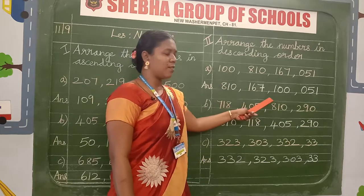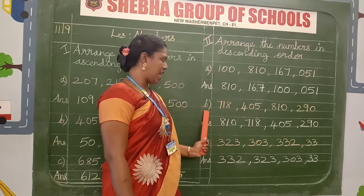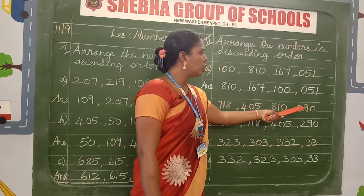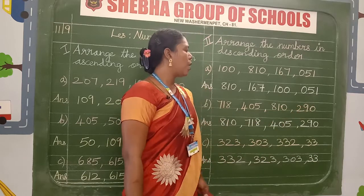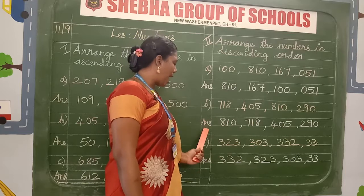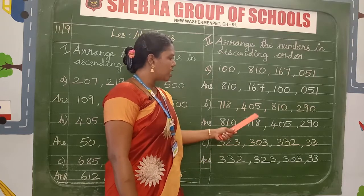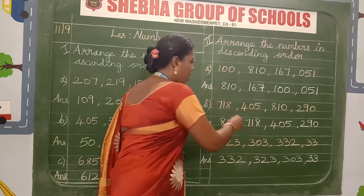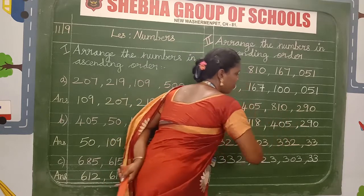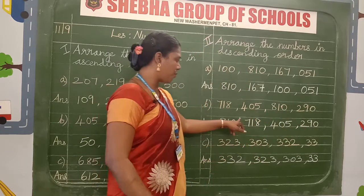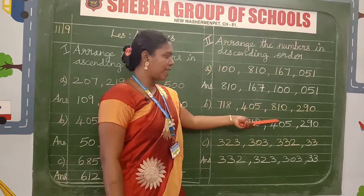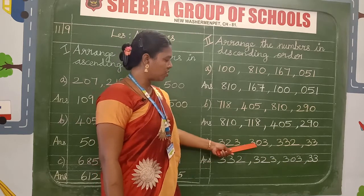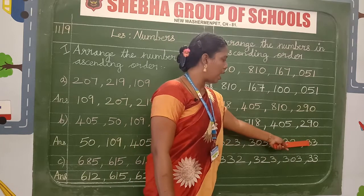After finishing the A sum, leave the line and start writing the B sum. The question is: 718, 405, 810, 290. Write the descending order answer: 810, 718, 405, 290. Put a comma mark — it is very important to separate the numbers. Give the finger gap also. After finishing the B sum, leave the line and start the C sum: 323, 303, 332 and lastly 33.